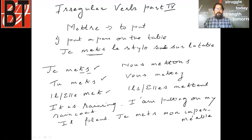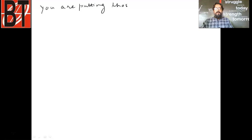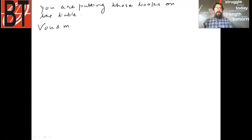So you understand the conjugation — it's irregular: je mets, tu mets, il met, elle met, nous mettons, vous mettez, ils/elles mettent. For example: 'You are putting those books on the table.' Vous mettez ce livre sur la table.